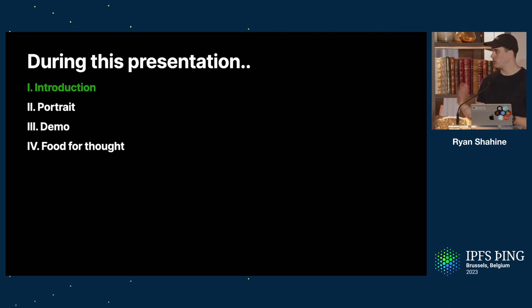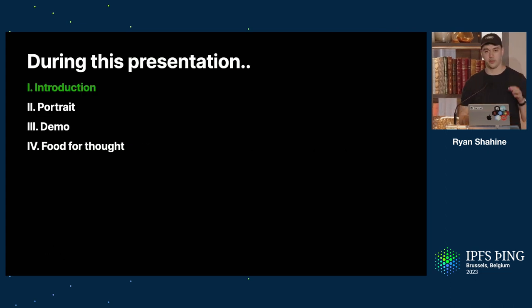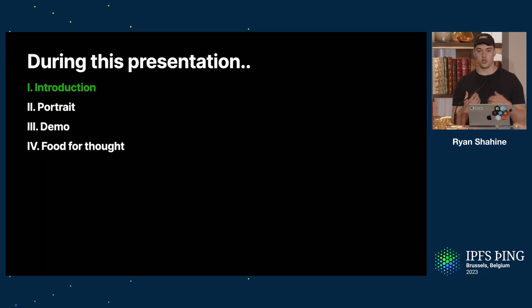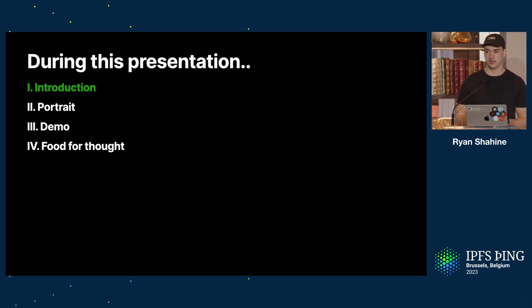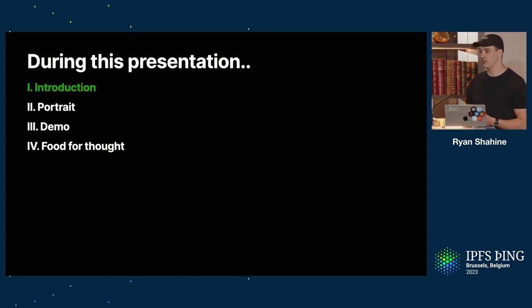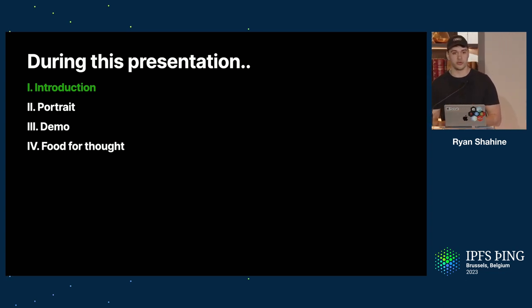Today I'll be talking about how we use GPT to build decentralized websites with a single click. I'll talk a bit about what Portrait is, what we're aiming to solve, and then we'll dive into a demo of how we can actually generate a decentralized website with a single click. And what kind of implications that has. After the demo, we'll finish with a food for thought where we consider the ethical implications of AI.